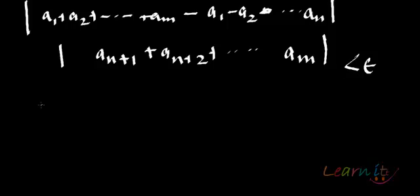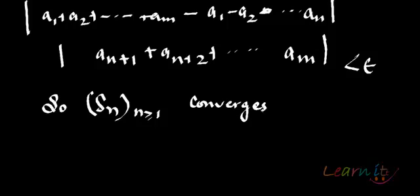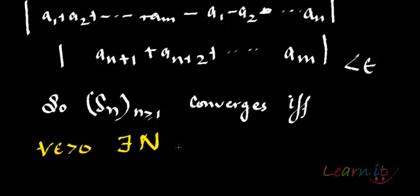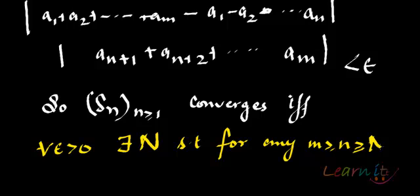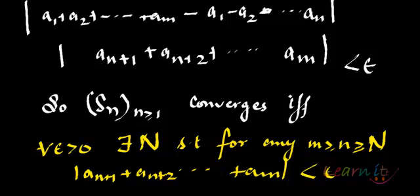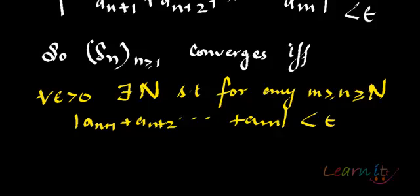Therefore, the criteria says that Sn converges if and only if for all epsilon greater than 0, there exists N such that for any m, n ≥ N, we have that |A_{n+1} + A_{n+2} + ... + A_m| < epsilon. This is the Cauchy criteria.